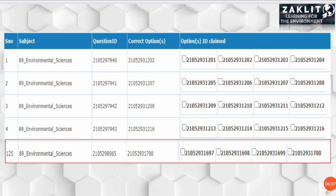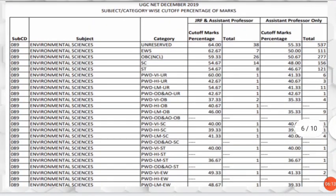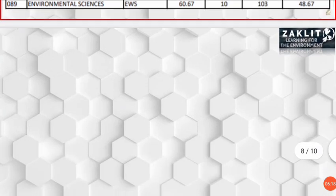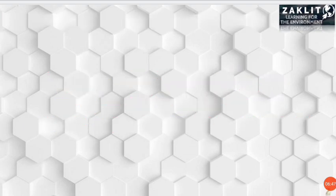If someone successfully challenges a wrong answer key entry, those students will also receive marks. Now coming to the expected cut-off: the cut-off depends on several factors — number one is the difficulty of the question paper; if the paper is difficult the cut-off will be low, if easy it will be higher. Number two is the number of students appearing, and number three is the level of performance of candidates.